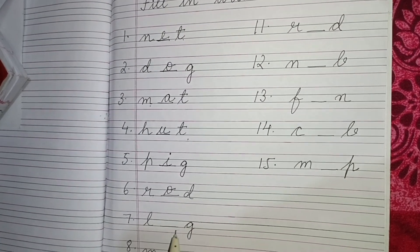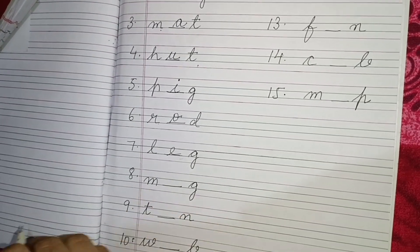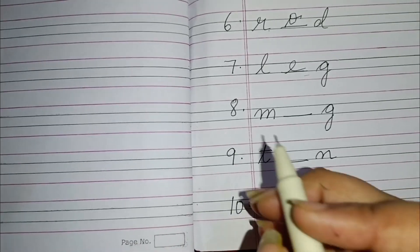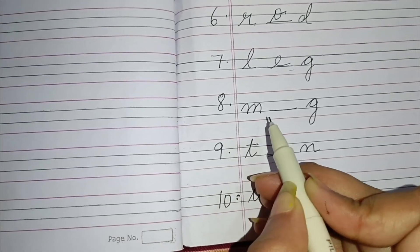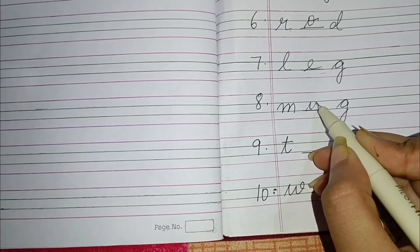Then L dash G means L E G, leg. Next is M dash G. So here it will be M U G, mug.